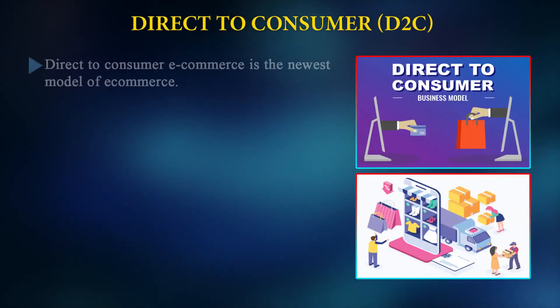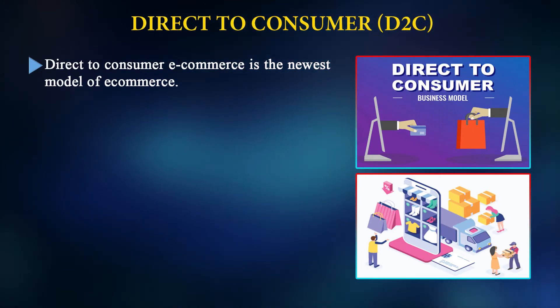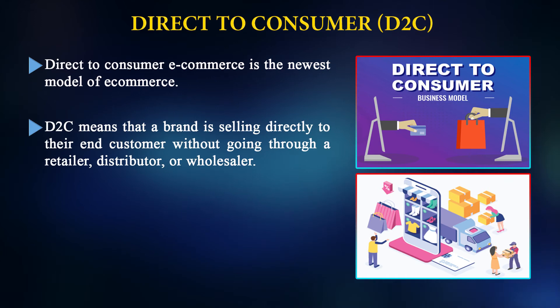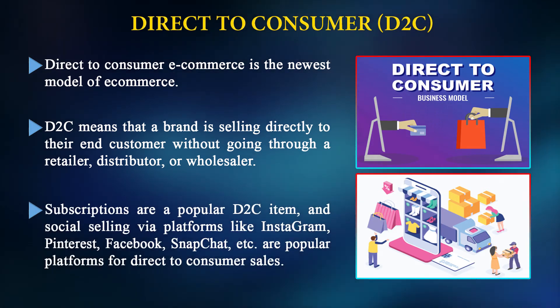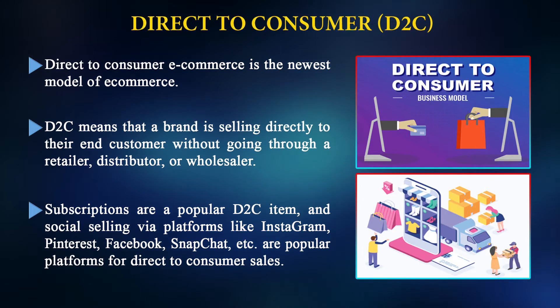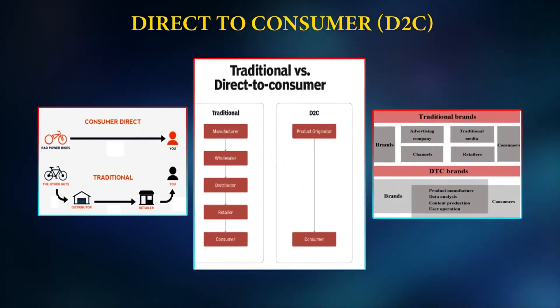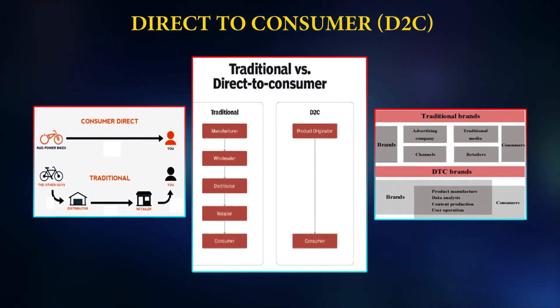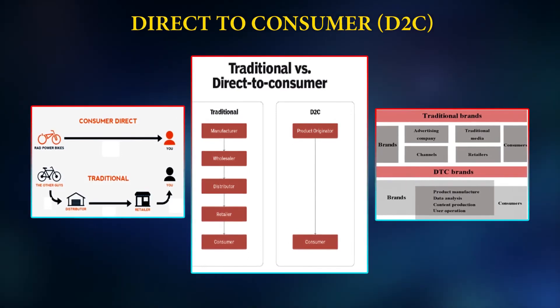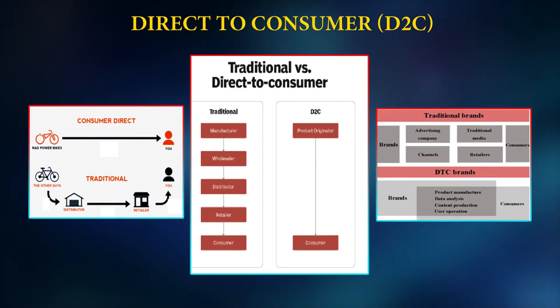Direct to Consumer (D2C) is the newest model of e-commerce. D2C means that a brand is selling directly to their end consumer without going through a retailer, distributor, or wholesaler. Subscriptions are popular D2C items, and social selling via platforms like Instagram, Pinterest, Facebook, and Snapchat are popular channels for direct-to-consumer sales. In the D2C model, consumers are served directly, while in the traditional way, certain intermediaries lead to consumers through distribution or retailers.